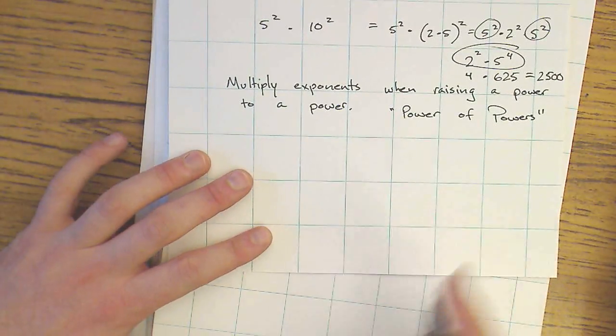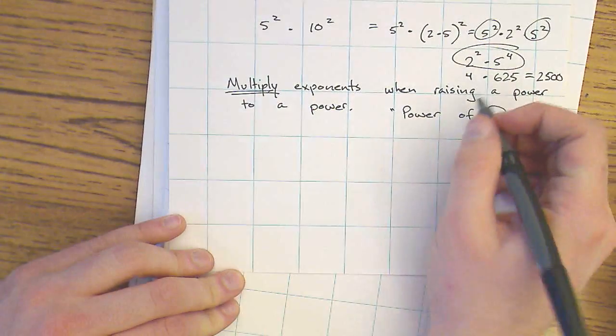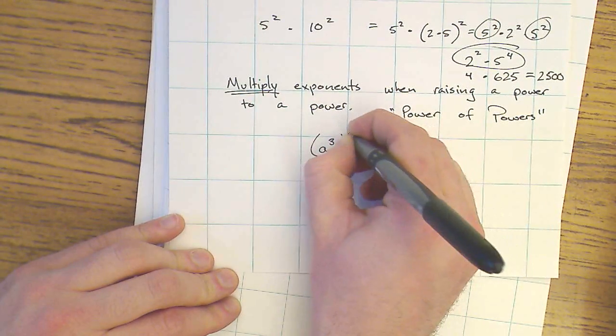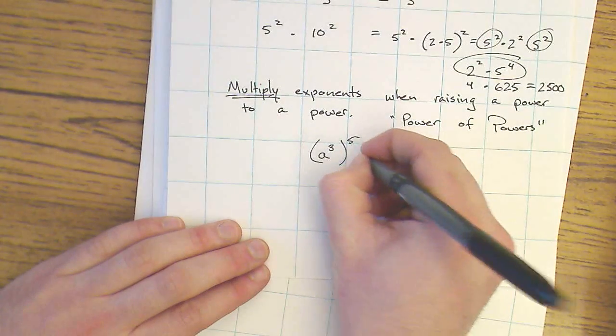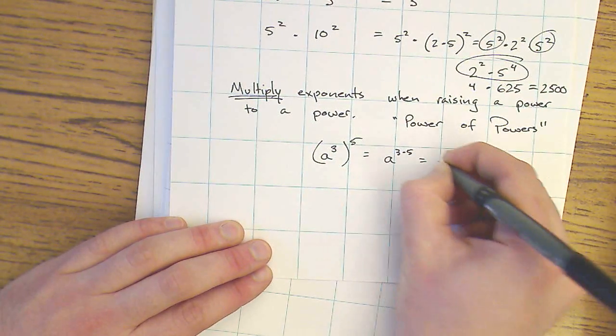Okay. We multiply exponents when we're raising a power to a power. For example, if I have a to the 3rd to the 5th, this is a time when I would do a to the 3 times 5 or a to the 15th.